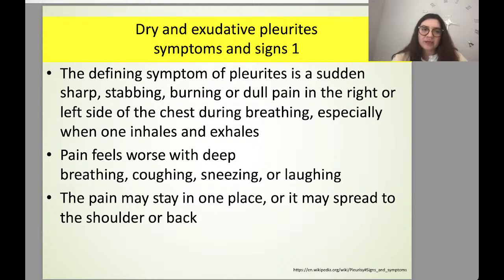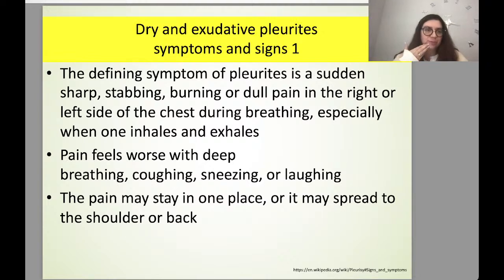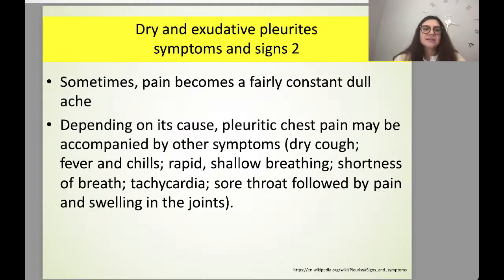Symptoms and signs of pleuritis: the defining symptom is sudden sharp, stabbing, burning, or dull pain in the right or left side of the chest during breathing, especially when inhaling and exhaling. Pain worsens with deep breathing, coughing, sneezing, or laughing. The pain may stay in one place or spread to the shoulder or back. Associated symptoms include dry cough, fever, chills, rapid shallow breathing, shortness of breath, tachycardia, and sore throat followed by pain and swelling in the joints.